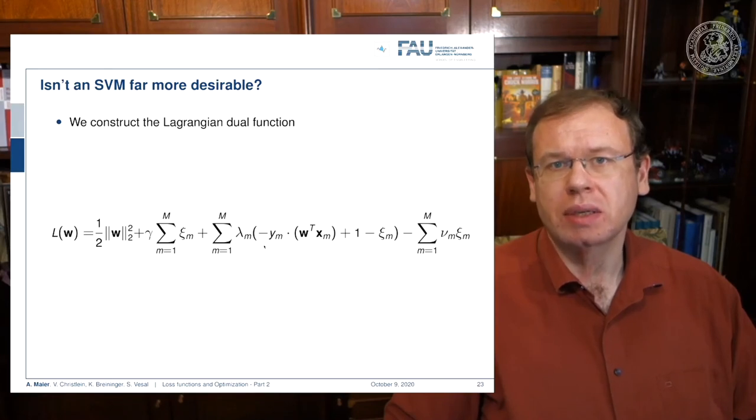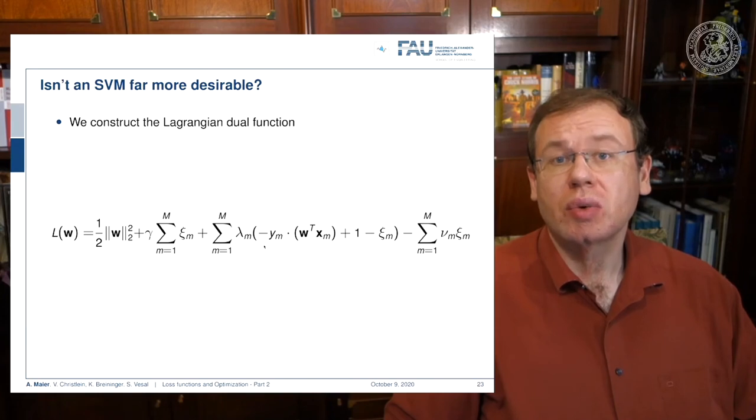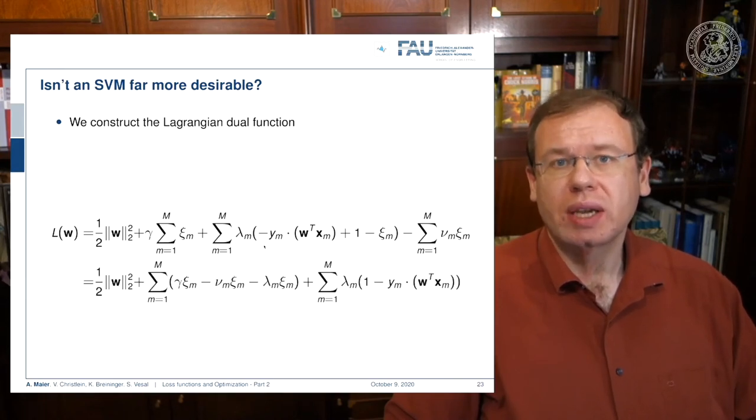In order to do so, you introduce Lagrange multipliers lambda and nu. So you can see that the constraints that we had in the previous slide, they now receive multipliers lambda and nu. Of course, there is an additional nu m that is introduced for the individual constraints. Now you can see that this forms a rather complex optimization problem. Still, we have a single Lagrangian function that can be sought to be minimized for all w, xi, lambda, and nu. So there's a lot of parameters here.